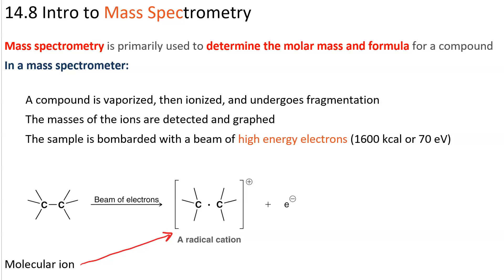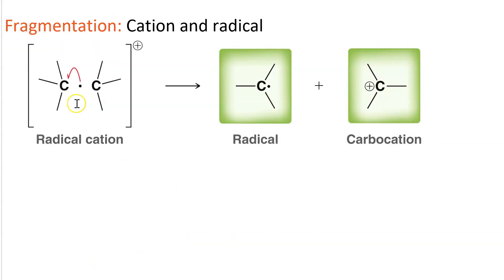The molecular ion has the same mass as the original compound. A sigma bond that consists of only a single electron is unstable, so that single electron can associate itself with either half of the molecule or with either fragment. The side it associates with becomes a radical, and the side that lost the electron becomes a carbocation.